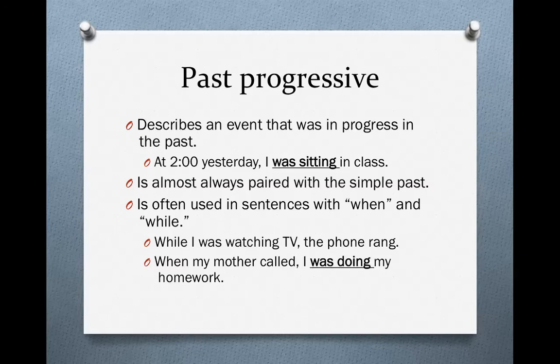The past progressive is almost always paired with the simple past. You'll have a sentence with two verb tenses: in one clause you have the simple past, and in another clause you have the past progressive. It is often used in sentences with the words 'when' and 'while.' For example, 'While I was watching TV, the phone rang.' In the while-clause we use the past progressive, and in the main clause we use the simple past. The phone ringing happened at one specific time, but watching TV occurred before, during, and after the phone rang — it was in progress.